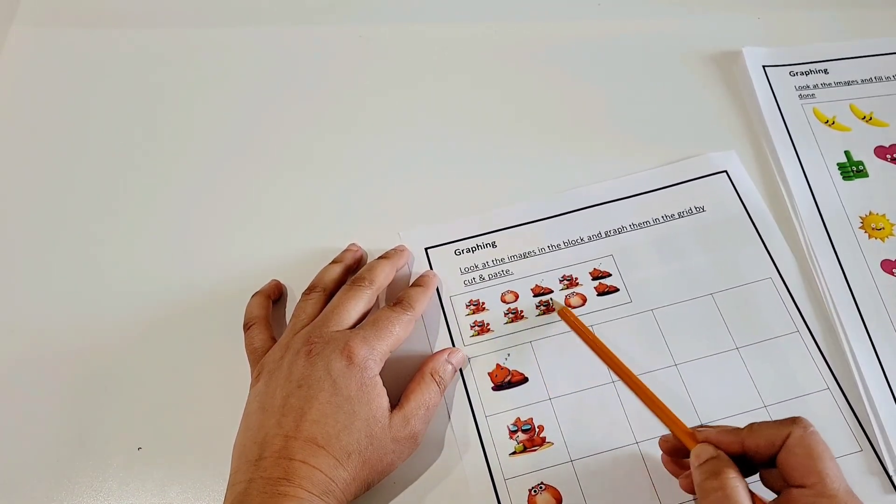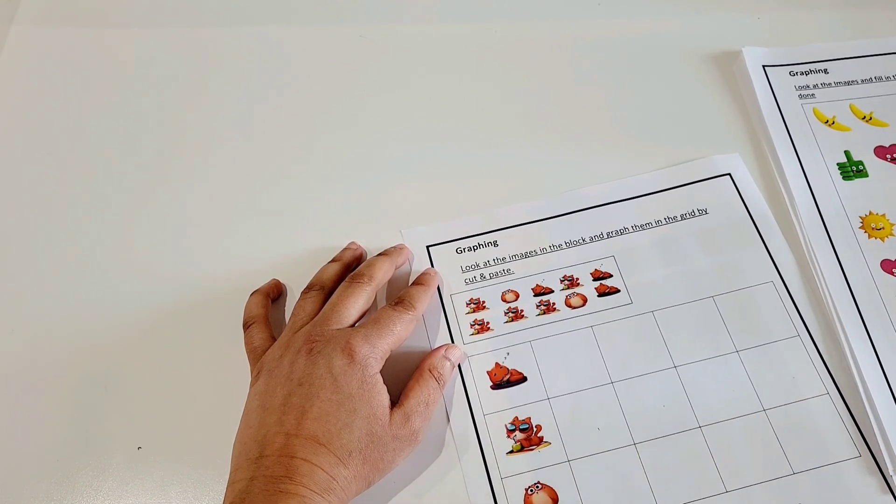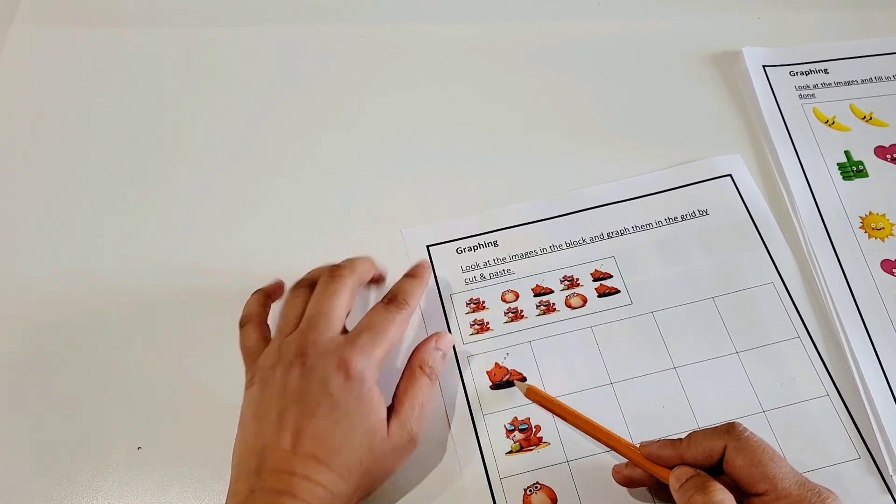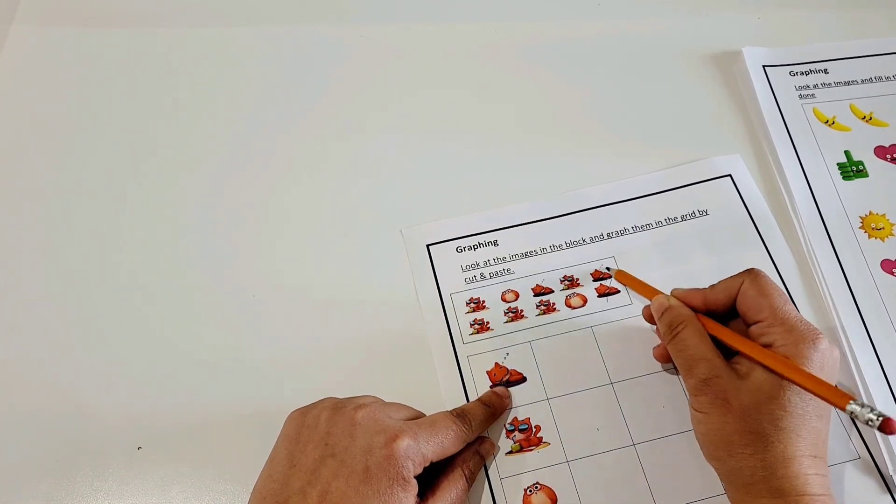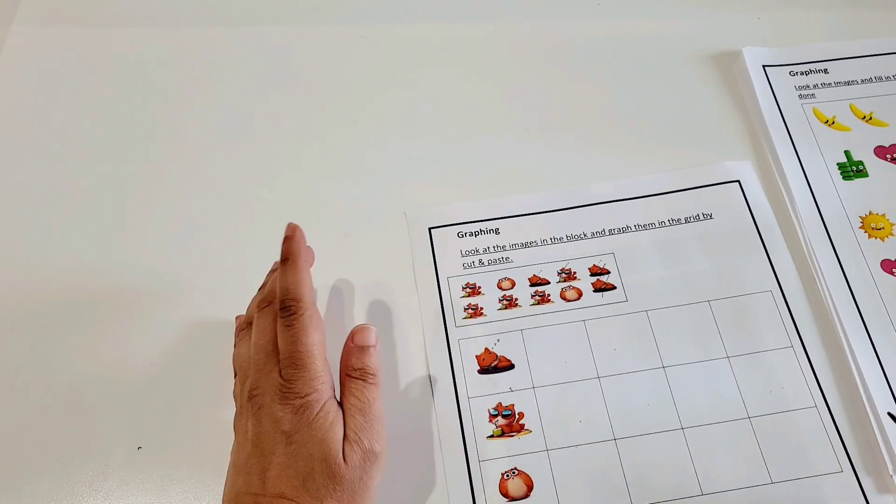So you have 1, 2, 3, 4, 5 cats here, right? So you have to cut 4 cats and you have to put them right here. Now how many of them are the sleeping cats? 1, 2, 3. So 1 is already here, you're going to put 2 more and then it's 3.